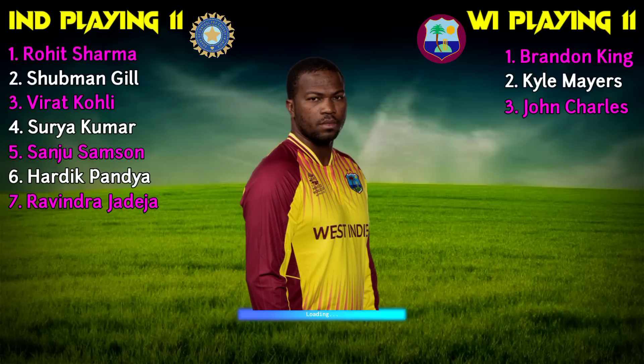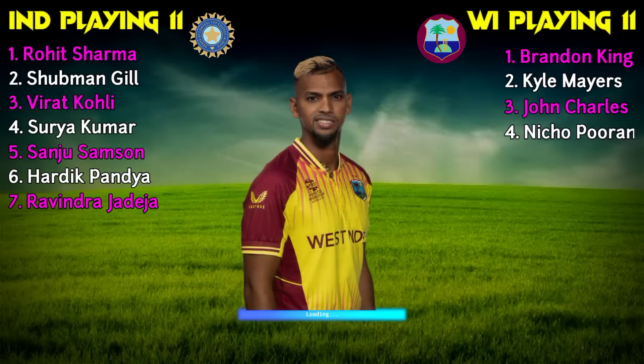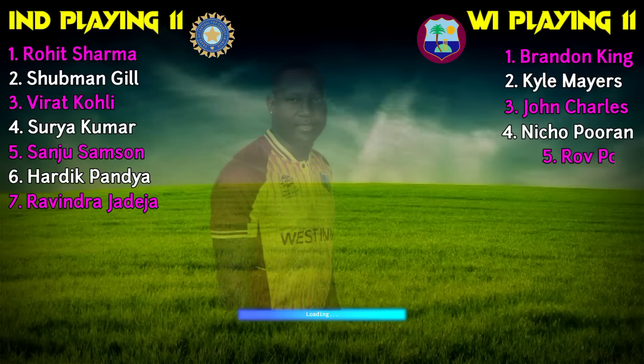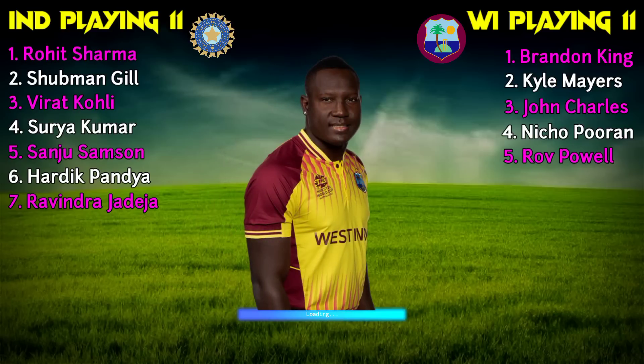West Indies Team Middle Order. Number 3: Johnson Charles, Right Handed Batsman. Number 4: Nicholas Pooran, Wicket Keeper Batsman. Number 5: Rovman Powell, Right Handed Batsman.